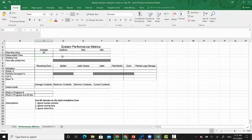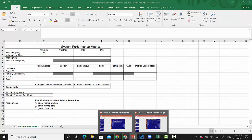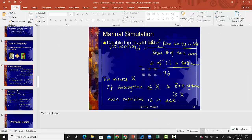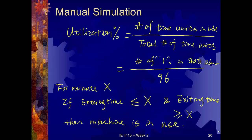What I want to focus on in this video is the utilization. To calculate the utilization — back to the slides — if it's a single capacity then you want to calculate the number of time units this machine or location is in use divided by the total time units. We have 96 here. To get the number of time units a machine is in use, we need to calculate that state variable, which represents whether a location is in use or not. To calculate dependent variables like utilization you need the state variable first.